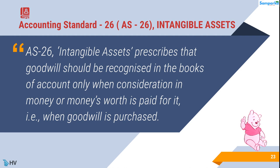Accounting Standard 26, Intangible Assets, prescribes that goodwill should be recognized in the books of account only when consideration in money or money's worth is paid for it — that is, when goodwill is purchased.